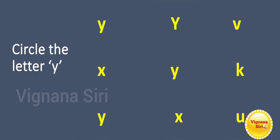Now we are going to do a little activity. So, first: small letter Y. Capital letter Y — is that right? So different students: capital letter Y and small letter Y. This is small letter V, and this one is small letter U. Right?